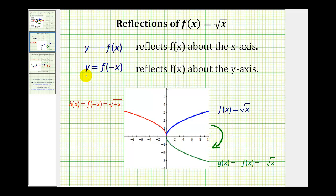If we have y equals f of negative x, this reflects the parent function across the y-axis. Notice in this case we're changing the sign of the x coordinates. So if we have f of negative x, or square root of negative x, notice how changing the sign of the x coordinates will reflect the parent function across the y-axis.